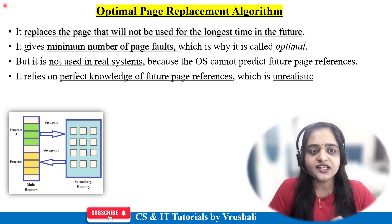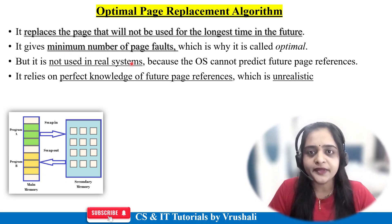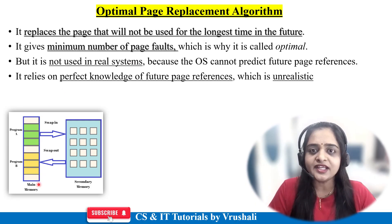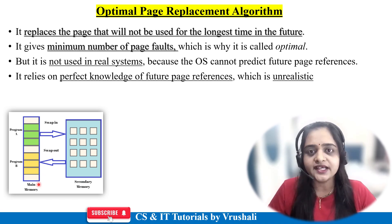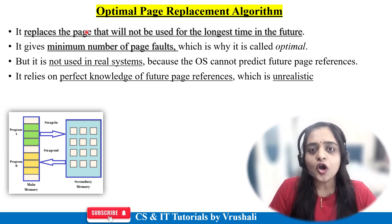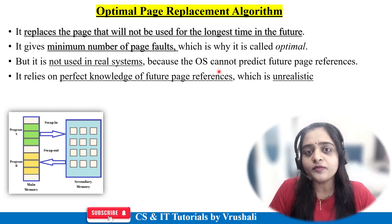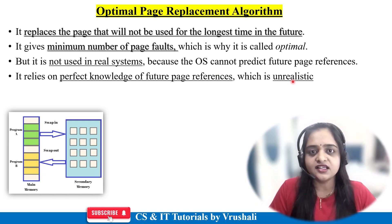Compared to other page replacement algorithms, the optimal page replacement algorithm generates the minimum number of page faults. As discussed earlier, if the CPU demands a particular page and it is present in main memory, that is called a page hit. If the particular demanded page is not present in main memory, that is called a page fault. Importantly, the optimal page replacement algorithm is not used in real systems because the operating system cannot predict future page references — so this is an unrealistic algorithm used just for comparison purposes.